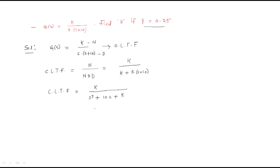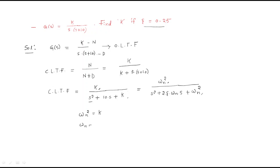This is the closed loop transfer function. The general closed loop transfer function of the second order system — since s has the power of 2 — has the formula: ωn² / [s² + 2ζωn·s + ωn²]. Here, comparing both expressions, ωn² equals K, so ωn equals √K.